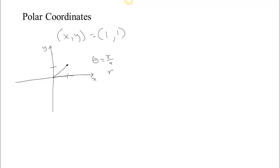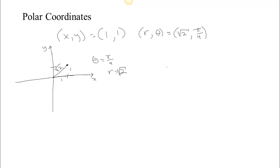We also specify how far we would walk to reach the location. Since we're going over one and up one, by the Pythagorean theorem, 1² + 1² = 2, so the radius is √2. In polar coordinates, we give the radius first and then the angle. So this point is represented as (√2, π/4) in polar — that's our polar representation of this point.